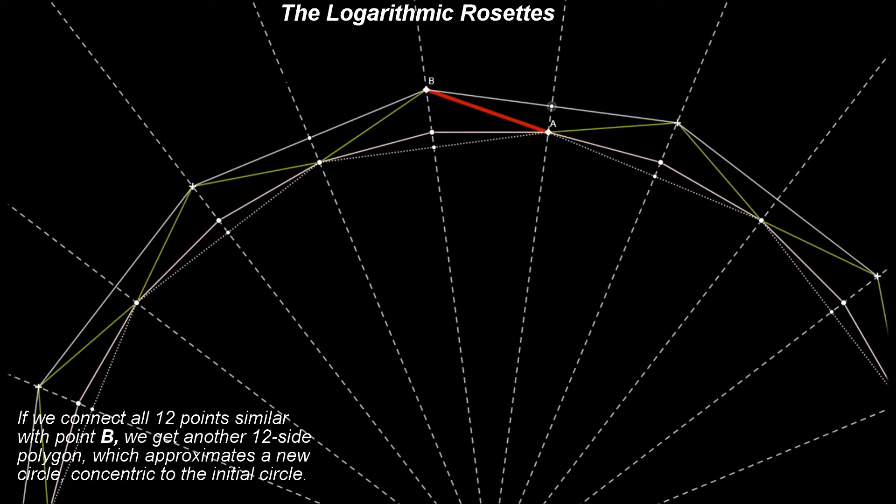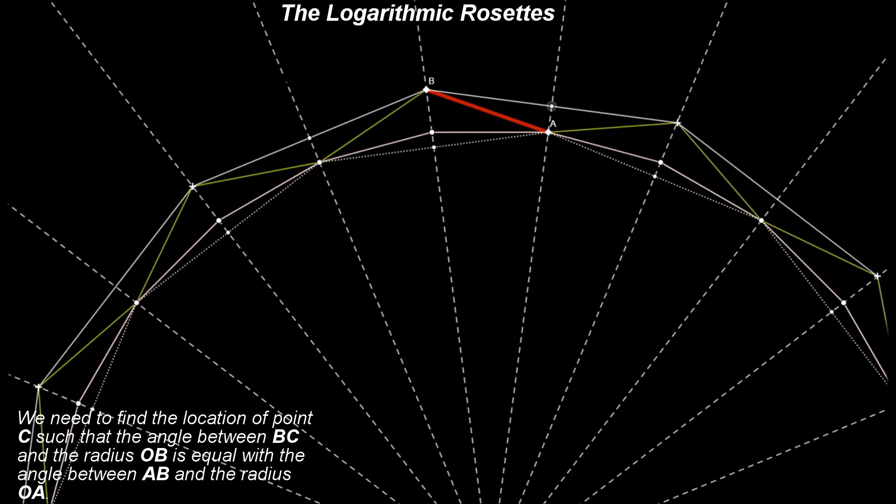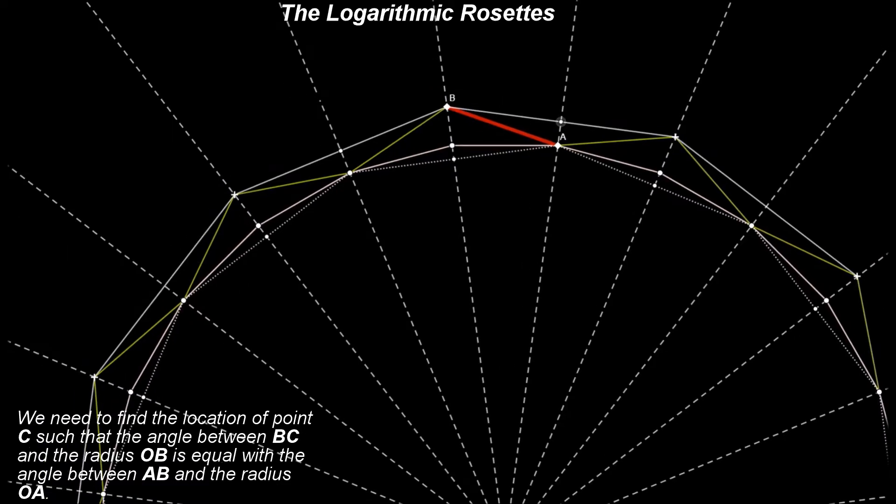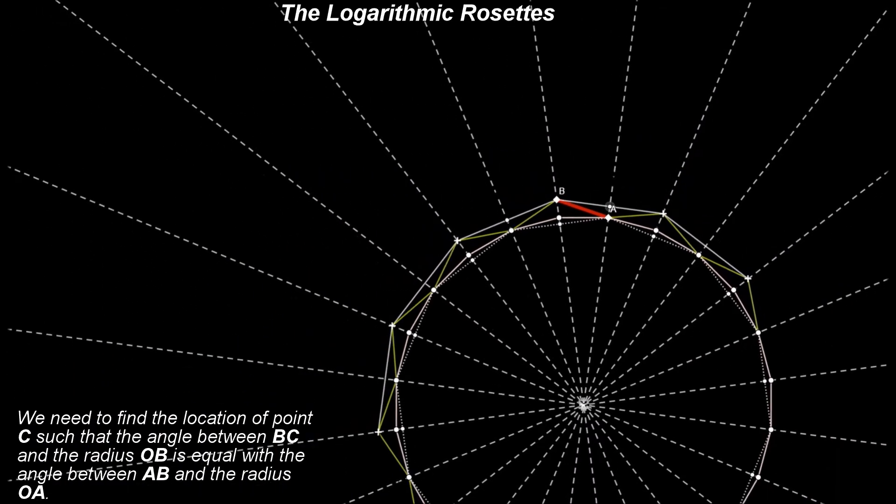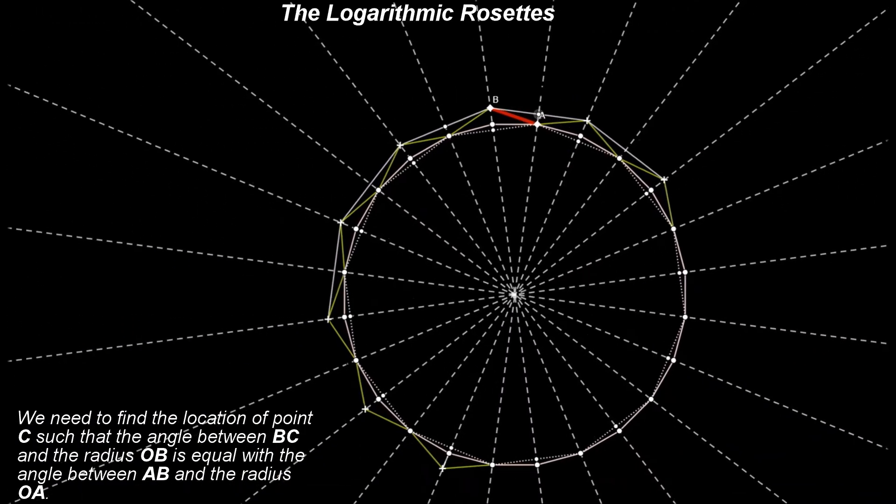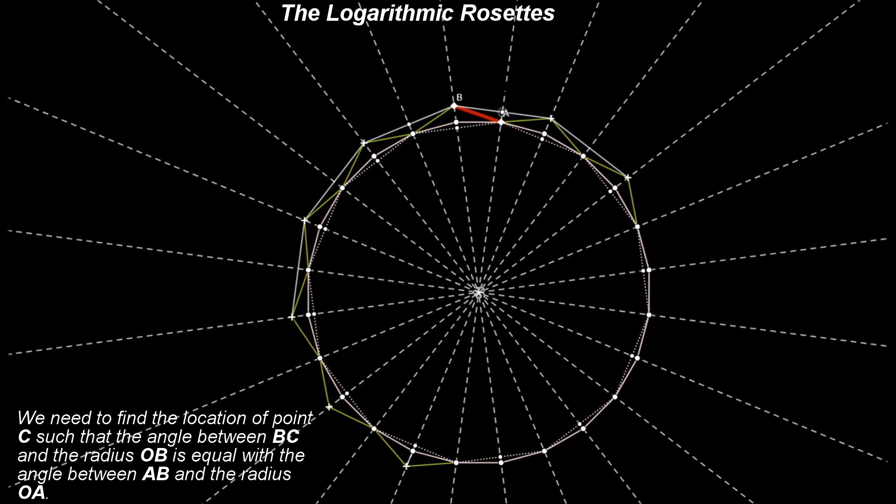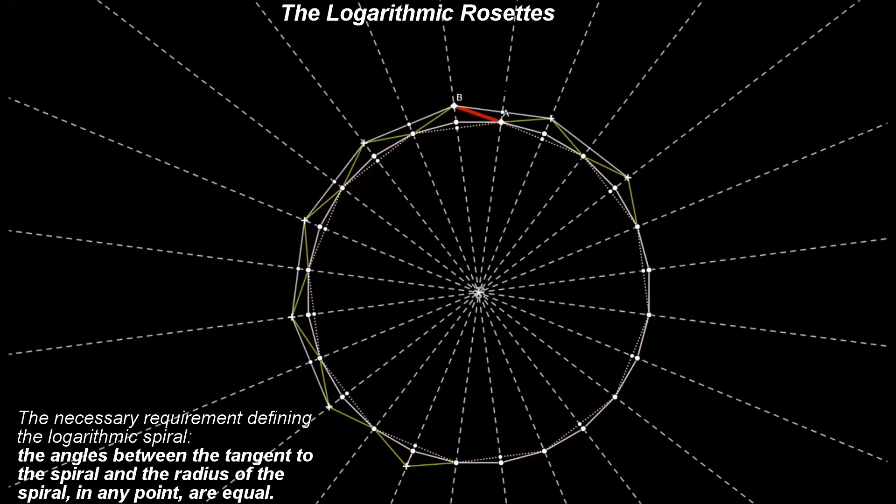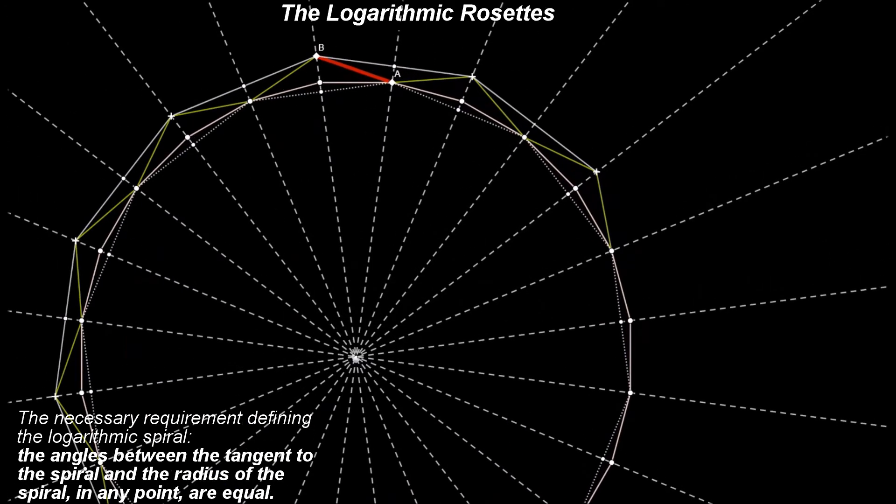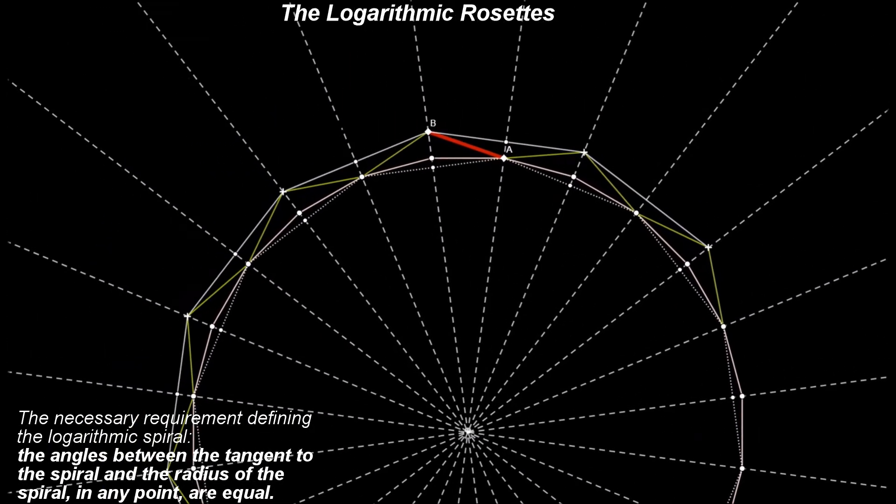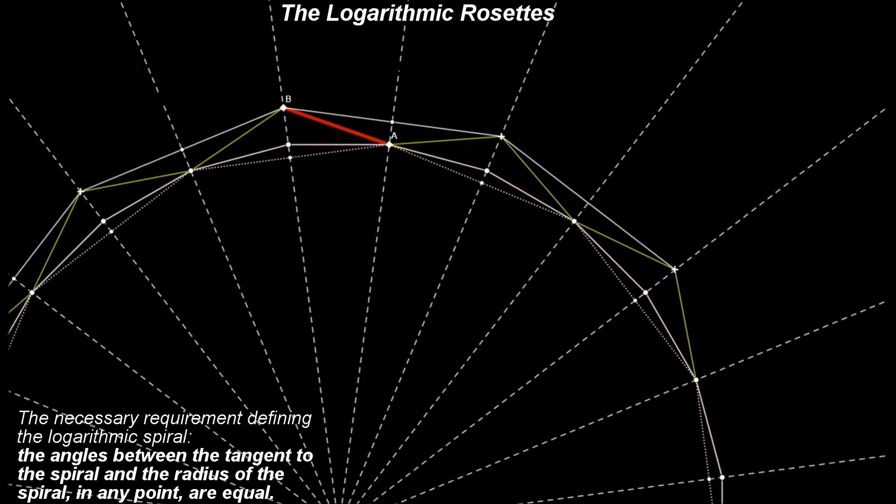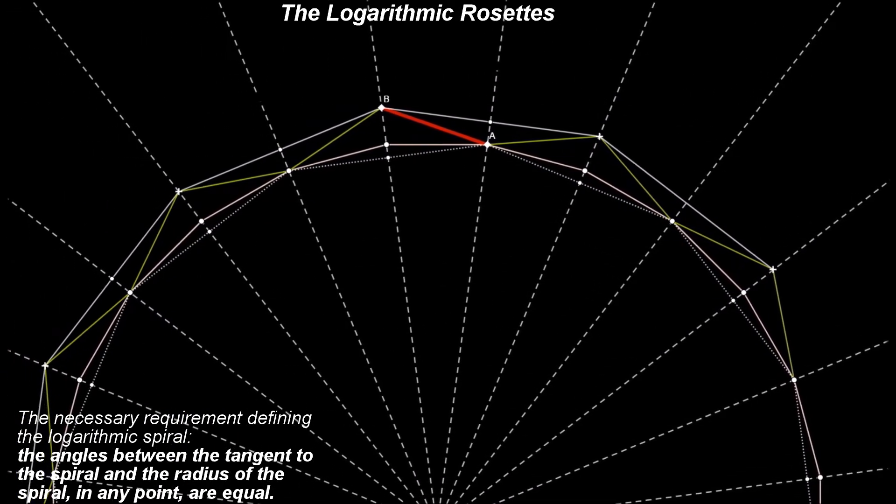We continue the process started above in a similar way for this new circle. We need to find the location of point C such that the angle between BC and the radius through B is equal with the angle between AB and the radius through A. This is the necessary requirement defining the logarithmic spiral. The angles between the tangent to the spiral and the radius of the spiral in any point are equal.